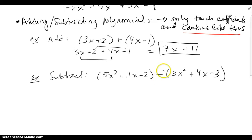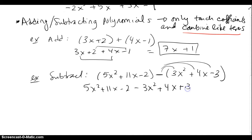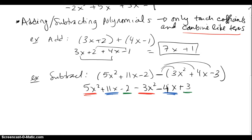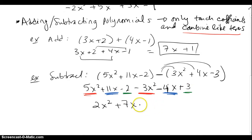To subtract two trinomials, because it's subtraction I have to distribute the negative. So I write them out, distribute the negative — that gives a minus 3x squared, minus 4x, and plus 3. Then I combine like terms: 5x squared minus 3x squared is 2x squared, 11x minus 4x is positive 7x, and negative 2 plus 3 is positive 1. And we're done.